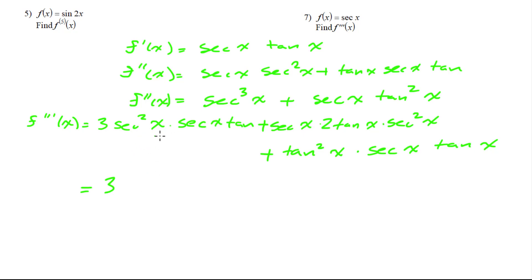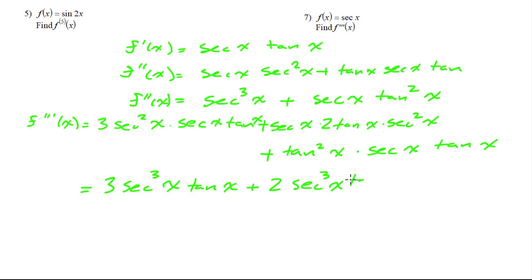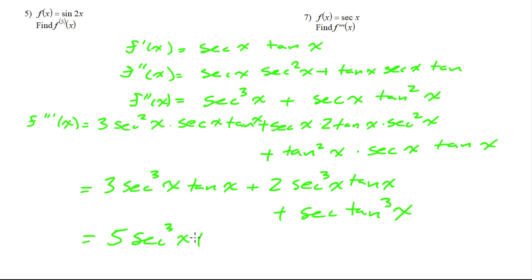Simplifying, the first term is secant cubed x tangent x, and combining the remaining terms we get 5 secant cubed x tangent x plus secant cubed x — wait, combining everything together we'd have 5 secant cubed x tangent x plus secant cubed x.